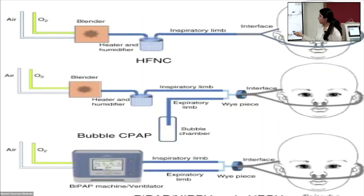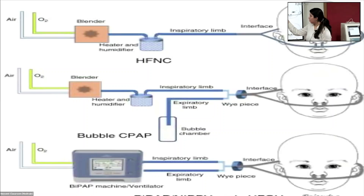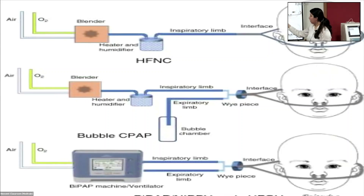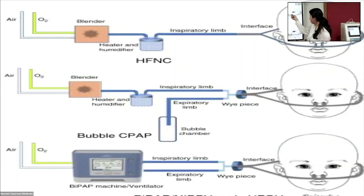This is a pictorial diagram. Air, oxygen, and a blender are prerequisites for neonatal ventilation. In HFNC, there is an air-oxygen tube and a blender, and a heater-humidifier which provides heated humidified air via the inspiratory limb and the interface to the baby. In bubble CPAP, the pressure generated in the respiratory circuit is via the immersion of the expiratory limb in water to a desired level, and via the interface, the pressure and oxygen are provided to the baby.